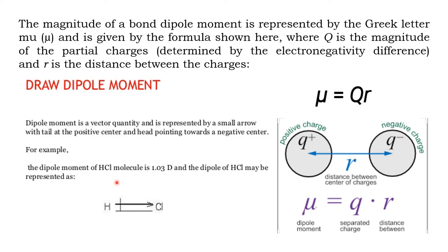Dipole moment is a vector quantity. We can calculate the dipole moment of any molecule if we know the charge present and the bond distance or the distance separating the charges. So mu (μ), the dipole moment, equals the magnitude of one of the charges multiplied by the distance separating them, or the bond length in that particular molecule.